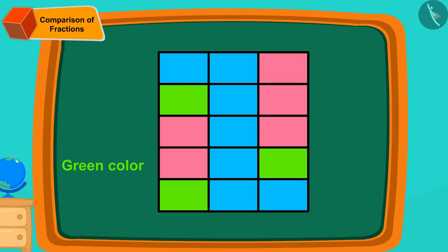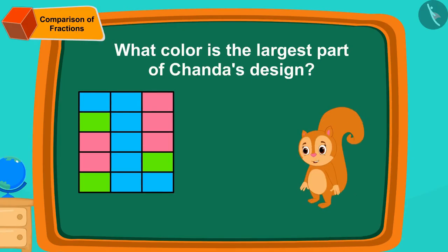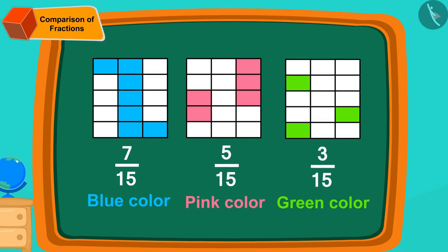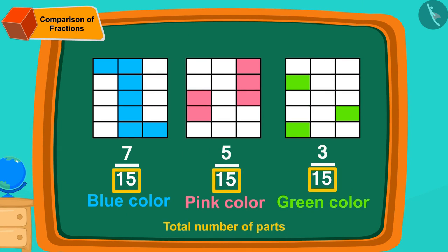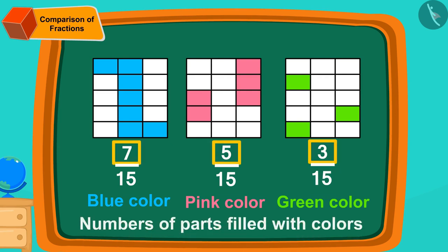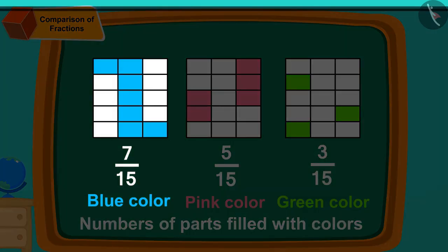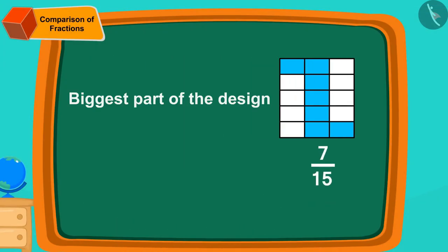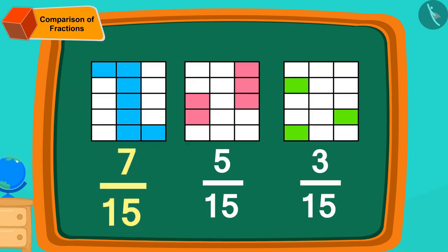Yes, green color is in three fifteenths part of Chanda's design. Children, can you tell what color is the largest part of Chanda's design? Let us look at the number of parts of all three colors. The total number of parts in the fractions of all the colors is exactly the same, so we will look at the numbers of parts filled with colors. The number of blue colored parts is seven, which is the highest. Hence the biggest part of the design, seven fifteenths, is filled with blue color — so the fraction seven fifteenths is bigger than both five fifteenths and three fifteenths.